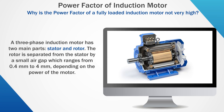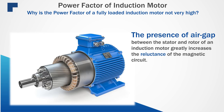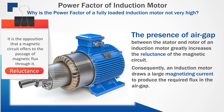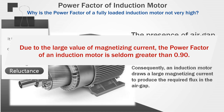A three-phase induction motor has two main parts: stator and rotor. The rotor is separated from the stator by a small air gap, which ranges from 0.4 mm to 4 mm depending on the power of the motor. The presence of the air gap between the stator and rotor greatly increases the reluctance of the magnetic circuit. As a result, an induction motor draws a large magnetizing current to produce the required flux in the air gap. Due to this, the power factor of an induction motor seldom exceeds 90%.